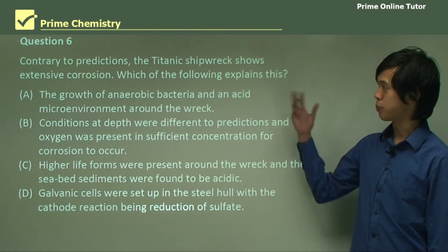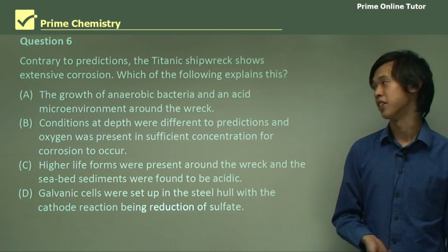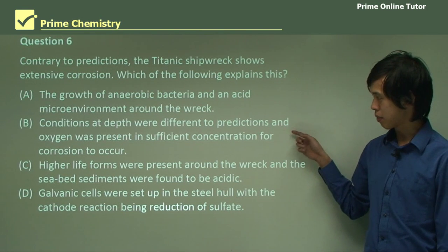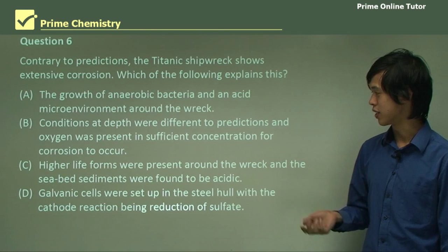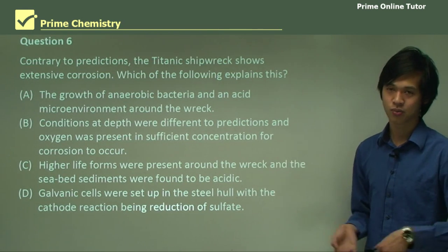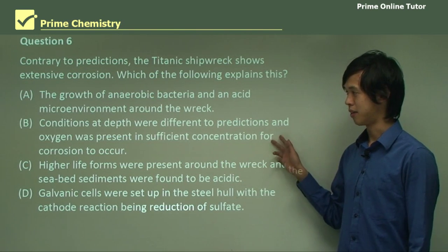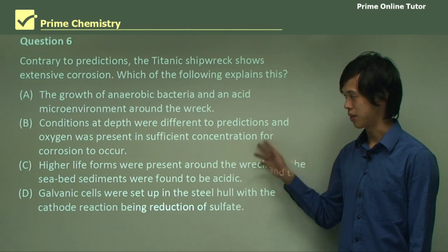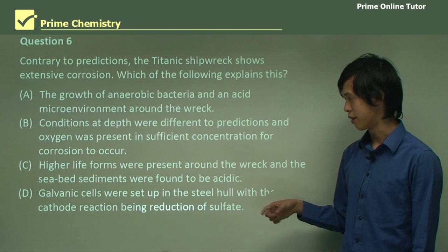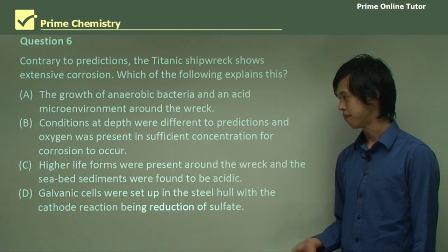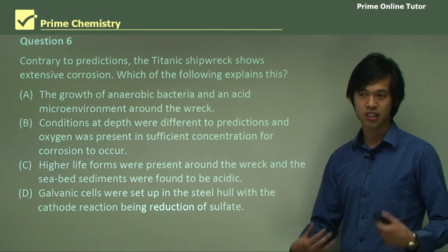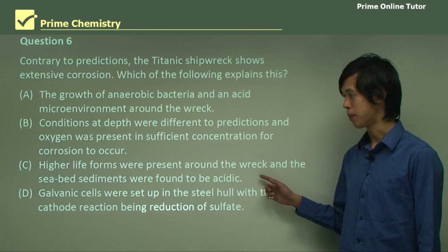Question six: contrary to your predictions, the Titanic shipwreck shows extensive corrosion. Which of the following explains this? Starting with option B — conditions at depth were different to predictions and oxygen was present in sufficient concentration for corrosion to occur — probably not this one, unless our science is really bad. Option C — higher lifeforms were present around the wreck, and the seabed sediments were found to be acidic — also not very likely, since higher lifeforms need oxygen for energy production at large scale. And there's no oxygen at the bottom of the ocean. Option D — galvanic cells were set up in the steel hull, with the cathode reaction being reduction of sulfate — we haven't really talked about galvanic cells yet, so it's probably not D either.